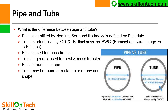What is the difference between pipe and tube? In a pipe, the ID (inside diameter) is measured, while in a tube, the OD (outside diameter) is measured. Pipe is identified by nominal bore and thickness as defined by the schedule, which provides the thickness of the pipe. Tube is identified by OD and its thickness in Birmingham Wire Gauge (BWG) or 1/100 inch. Pipe is used for mass transfer, while tube is generally used for heat and mass transfer. Pipe is round in shape; tube may be round, rectangular, or any other shape.